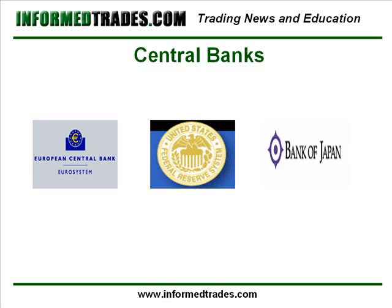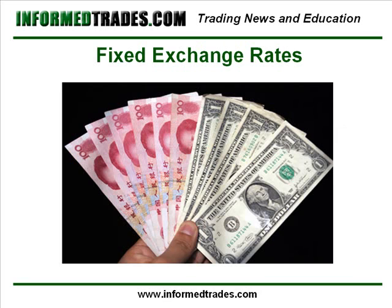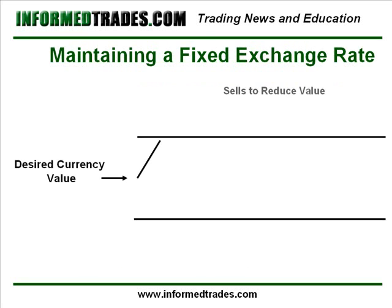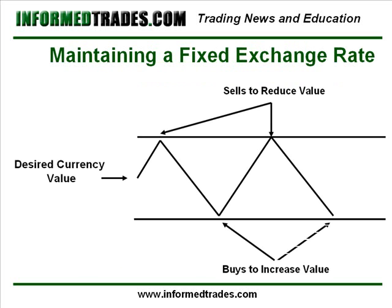There are two main reasons why a central bank would participate in the Forex market, the first of which is to fix the value of its currency to a particular level. Unlike the main currencies we'll be focusing on in this course, the currencies of many developing countries are fixed in value to the dollar or to some other currency or basket of currencies. This is done to promote international competitiveness and a currency environment more conducive to economic stability. Probably the most talked about example is China, who up until recently maintained a fixed value of their currency against the U.S. dollar. A central bank normally accomplishes this by buying their own currency when the value gets too weak, creating more demand and therefore driving the value up, and selling the currency when it gets too strong, creating a greater supply and therefore lowering its value back to the desired level.